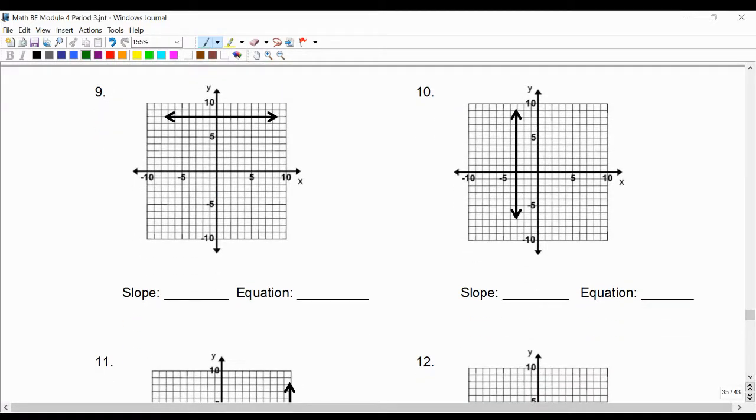Number nine is horizontal, and the rule was slope is zero, and the equation is y equals five, six, seven, eight—y equals eight, no x's.